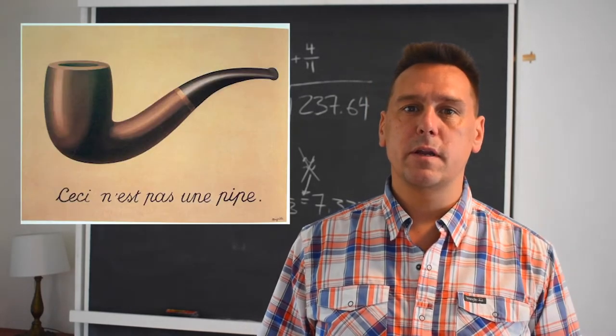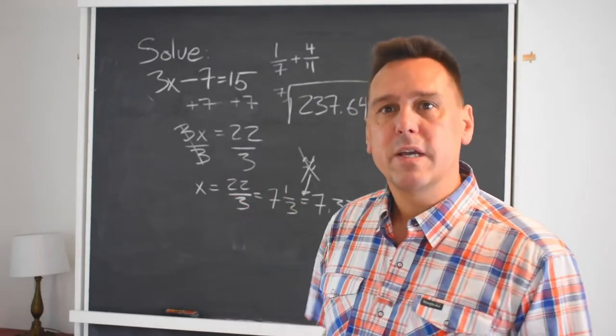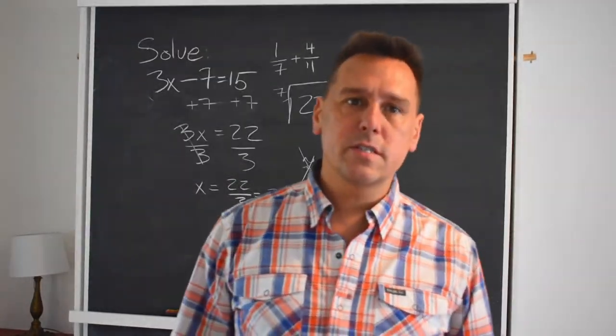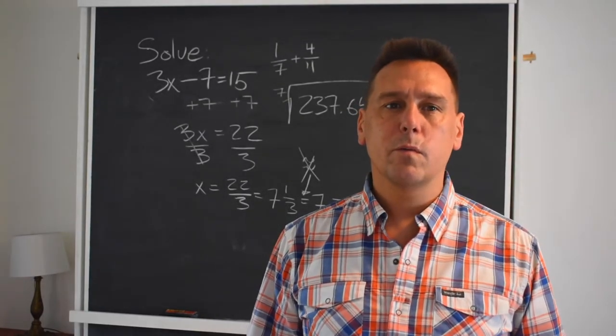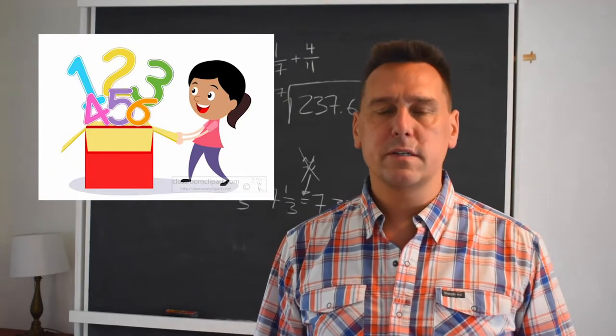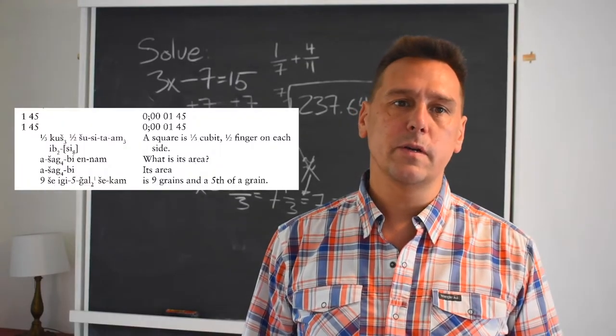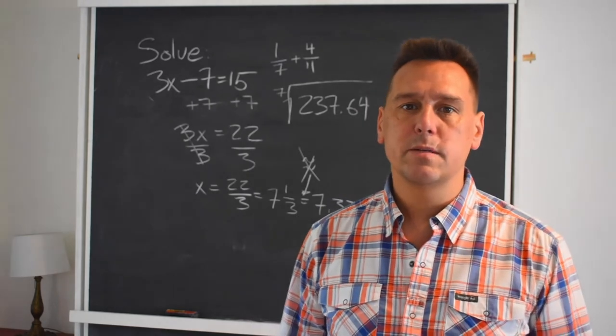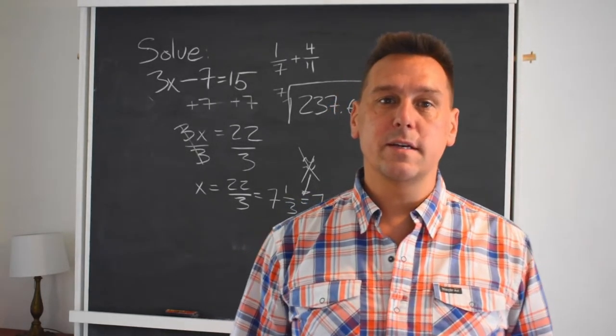Ideally the link between a symbol and its meaning is arbitrary. The three that we write up on the board isn't three itself, it's just a symbol that we've chosen, a numeral, to represent three. But just because the link between a symbol and its meaning can be arbitrary doesn't mean that in practice it is.